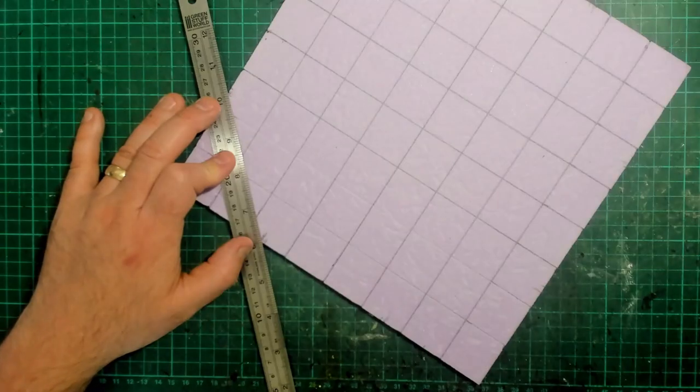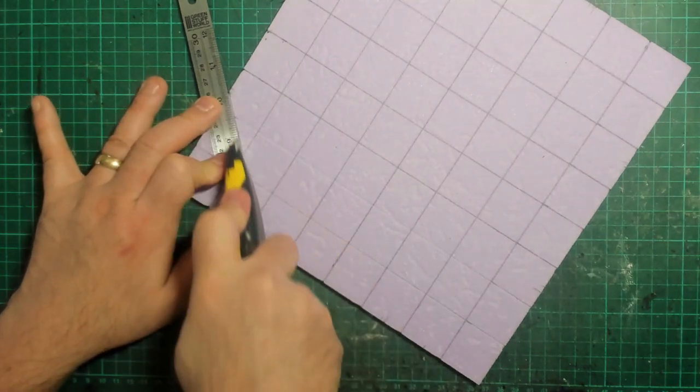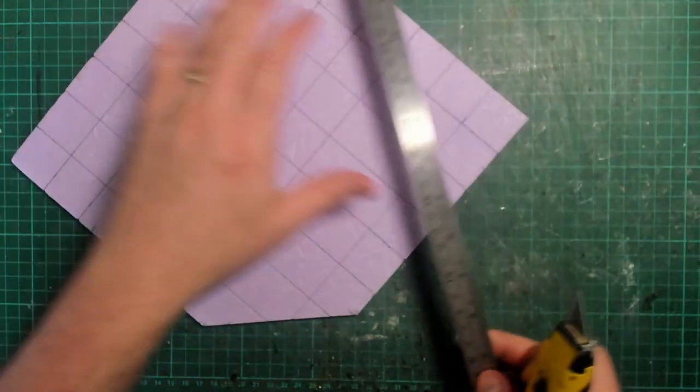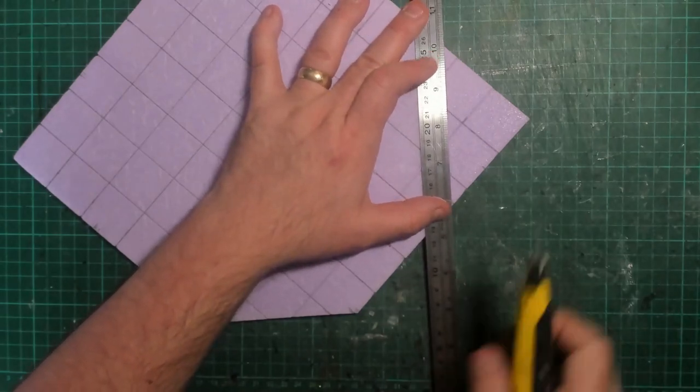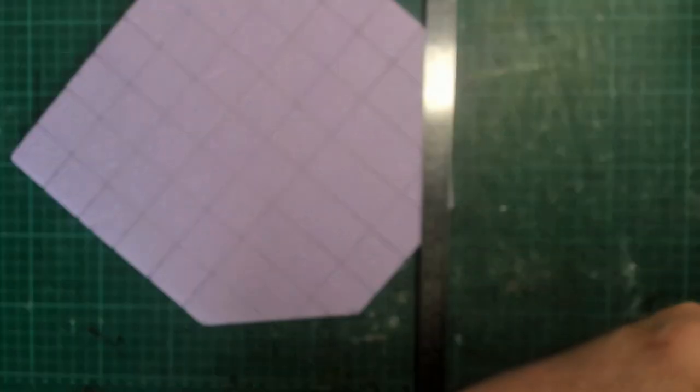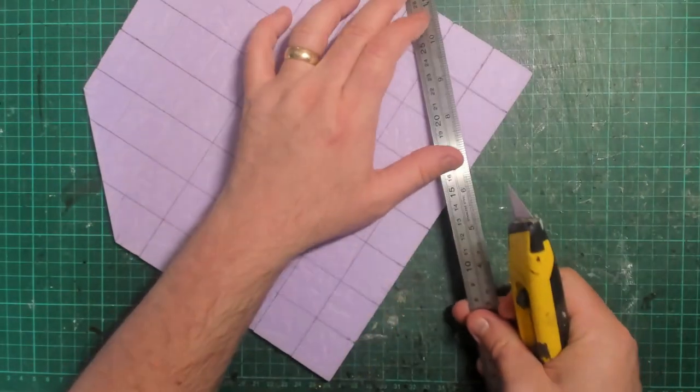And the real interesting bit comes when we turn it into an octagon. On each of the four edges at the center point, I measure two and a quarter inches either side. Line these up so you've got angles and cut them out forming an octagon. It's probably a better mathematical way of doing this, but for me, this worked quick and easy.